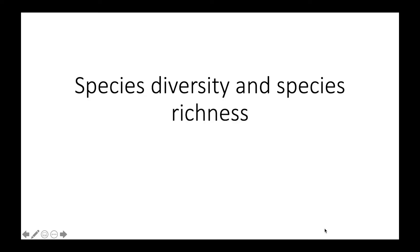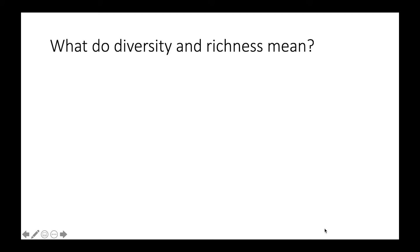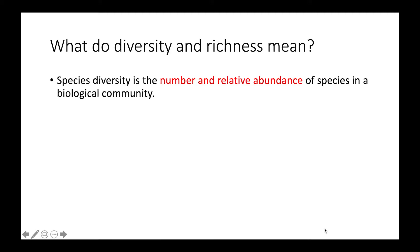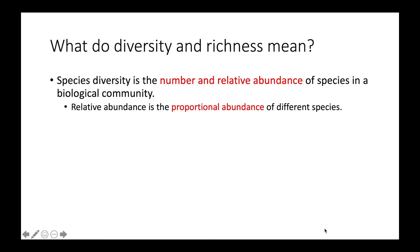This video is going to be about species diversity and species richness. Species diversity is the number and relative abundance of species in a biological community. Relative abundance is the proportional abundance of different species — for example, what percentage of all organisms in the community belong to one particular species versus another, and so forth.